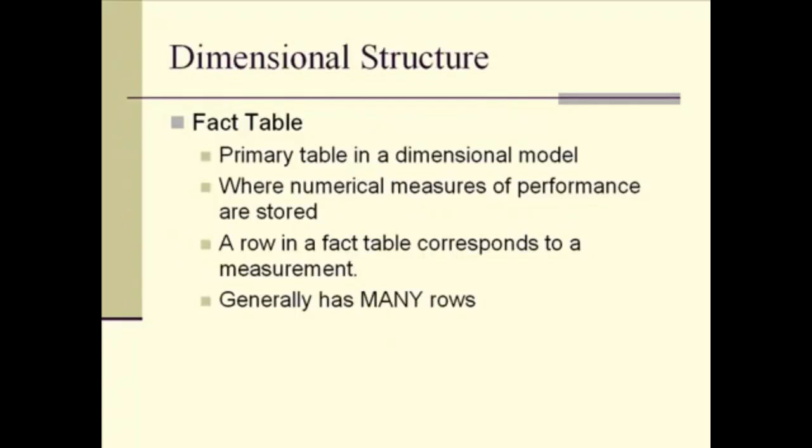The fact tables are the primary tables. This is the center, again, of the star, where numerical performance measures are stored. This might be cost measures, quantity measures, other types of numbers. And a row in a fact table really corresponds to a measurement. It might correspond to the sale of one item. It might correspond to an inventory reduction. And the fact table generally has many rows.